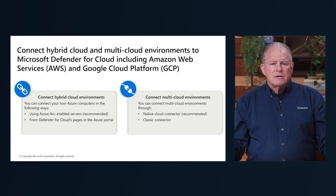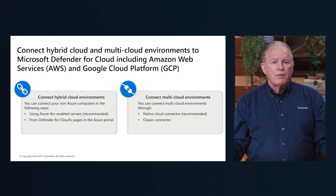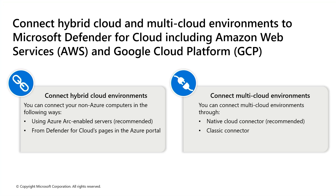Being able to connect to hybrid cloud or multi-cloud environments, you can now extend reach to your on-premises resources to provide that single pane of glass. On the left-hand side, you can connect using Azure Arc for those resources, or from the Defender for Cloud page you can enroll resources through the Azure portal. On the right-hand side, for multi-cloud environments, you can use native connectors available for GCP and AWS, or you can use the classic connector to pull inventory into Defender for Cloud so those resources can also be assessed.